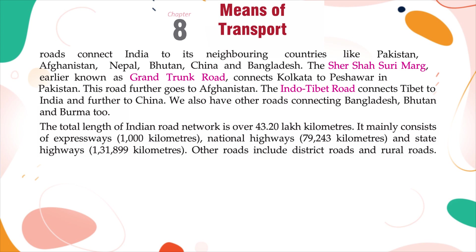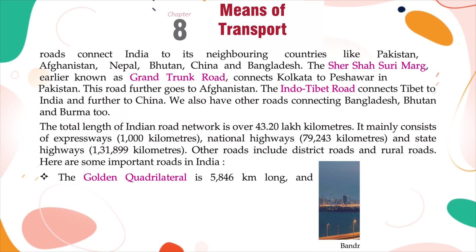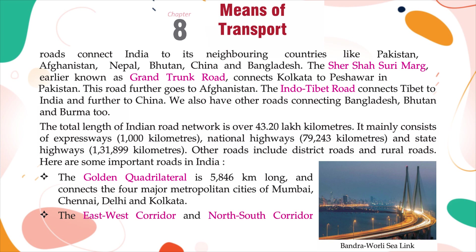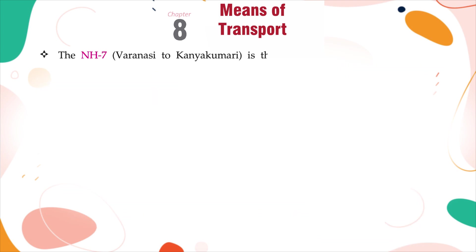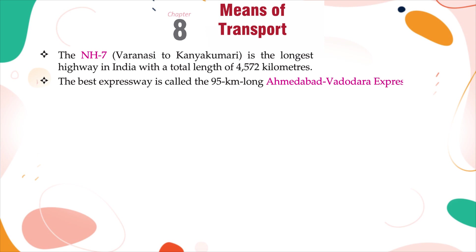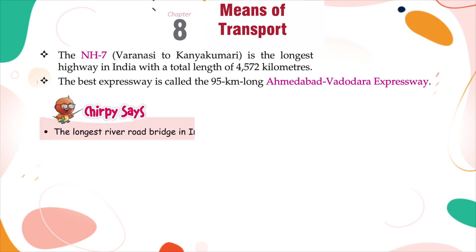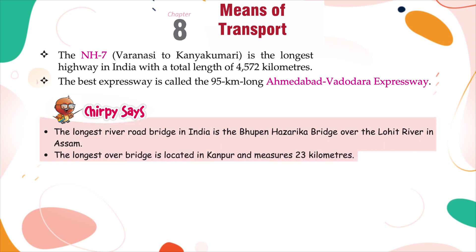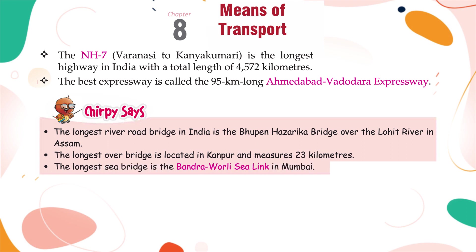Other roads include district roads and rural roads. The Golden Quadrilateral is 5,846 kilometers long and connects the four major metropolitan cities of Mumbai, Chennai, Delhi, and Kolkata. The East-West Corridor and North-South Corridor connect extreme parts of India. NH7, from Varanasi to Kanyakumari, is the longest highway in India with a total length of 4,572 kilometers. The best expressway is the 95-kilometer-long Ahmedabad-Vadodara Expressway. The longest river-road bridge in India is the Bhupen Hazarika Bridge over the Lohith River in Assam. The longest flyover is located in Kanpur and measures 23 kilometers. The longest sea bridge is the Bandra-Worli Sealink in Mumbai.